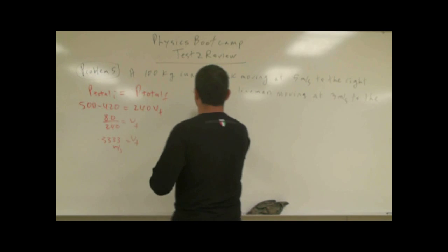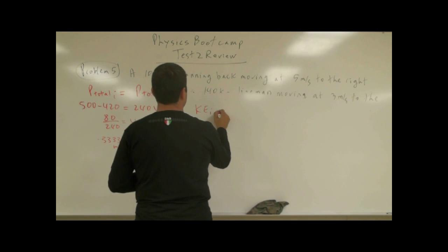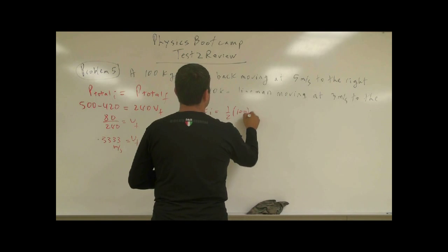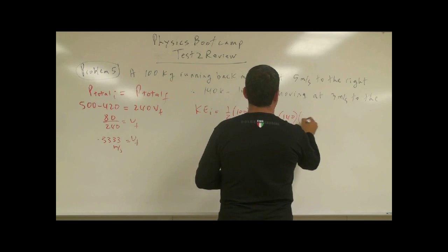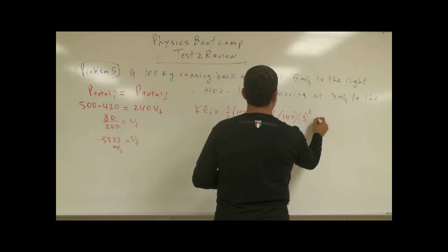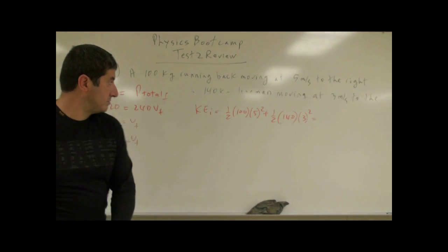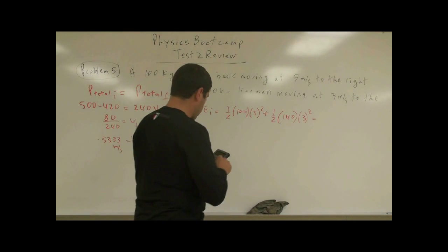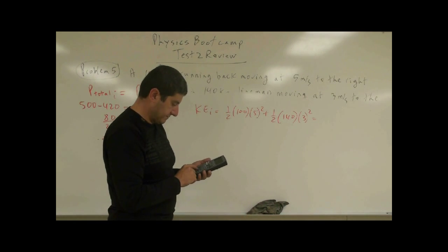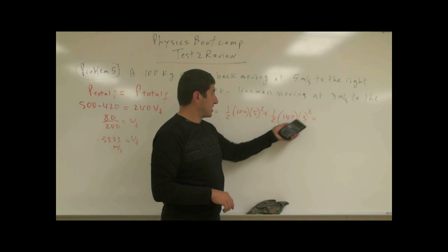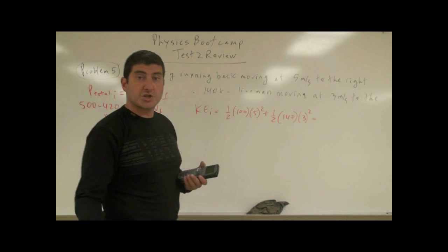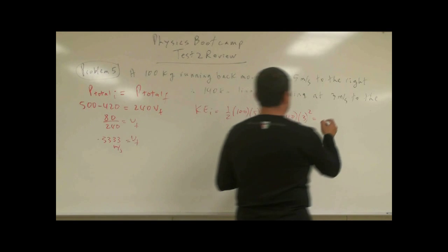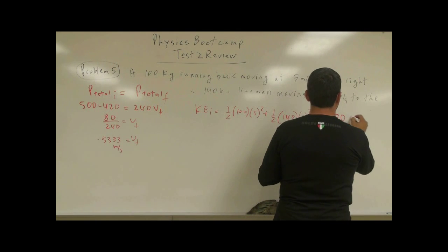The initial kinetic energy of the system is: KE_initial = ½ × 100 × 5² + ½ × 140 × 3² = 50 × 25 + 70 × 9 = 1250 + 630 = 1880 Joules.